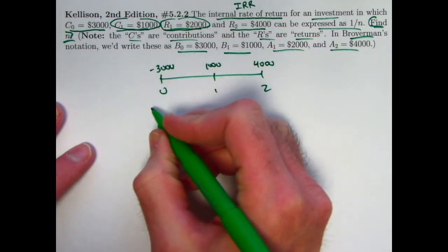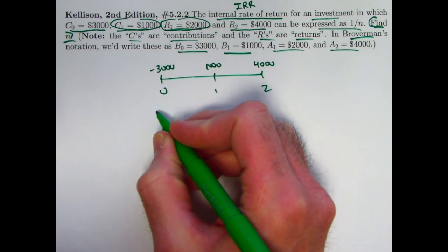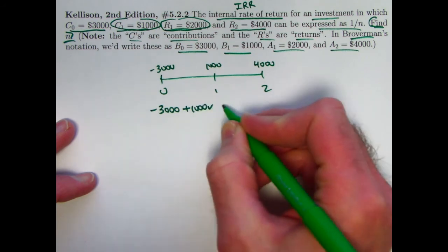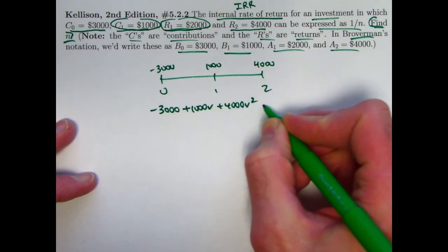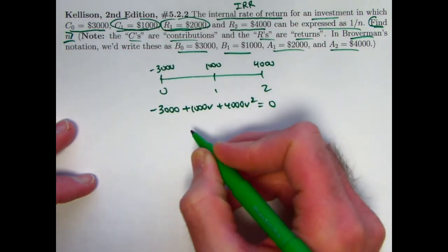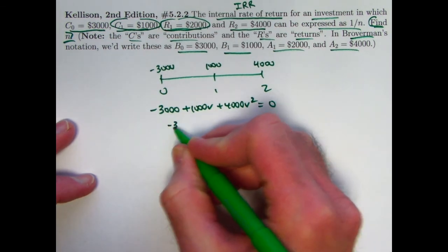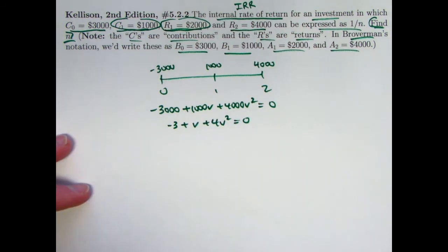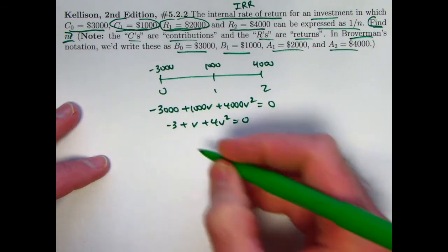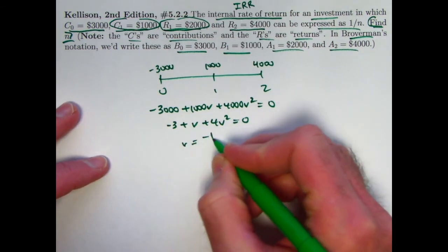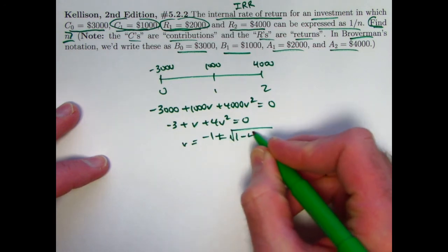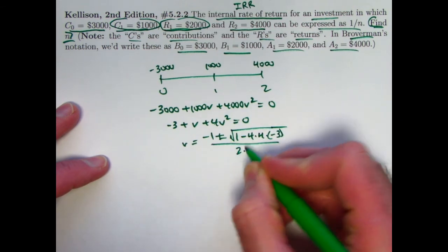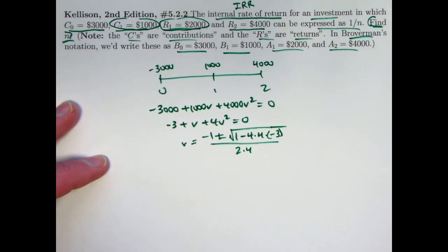So thinking of the equation of value at time zero, in terms of present values, you could write it as negative 3,000 plus 1,000 V plus 4,000 V squared equals zero. We could divide everything by 1,000. Negative 3 plus V plus 4 V squared. It's a quadratic equation. We can use the quadratic formula. V is negative 1 plus or minus the square root of 1 minus 4 times 4 times negative 3, all over 2 times 4.